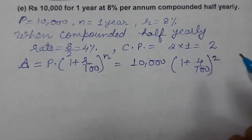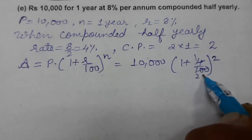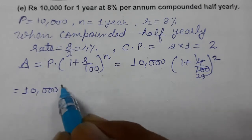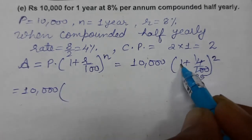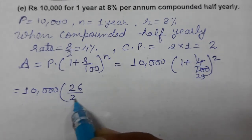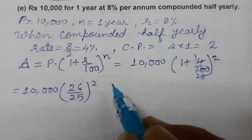Four ones are four, so we get 10,000 times, LCM is 25. Ones are 25, 25 plus 4 is 26. 26 by 25, the whole squared.